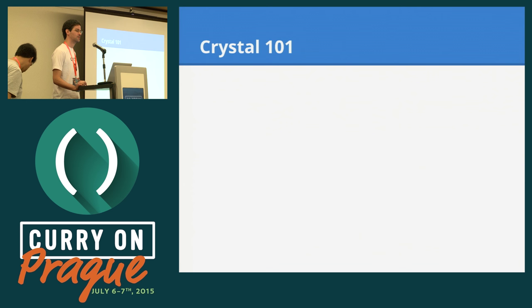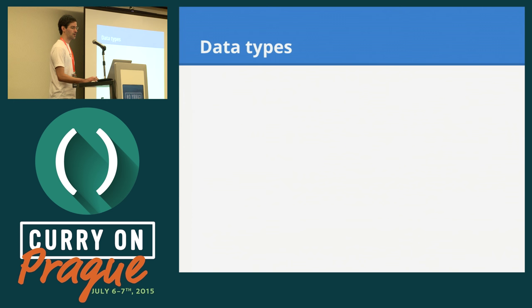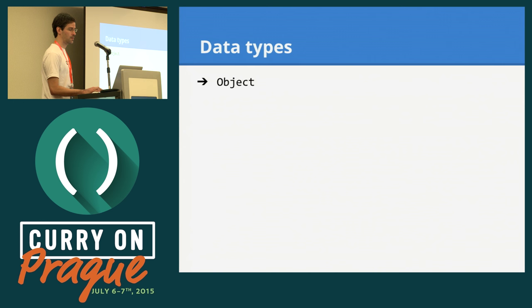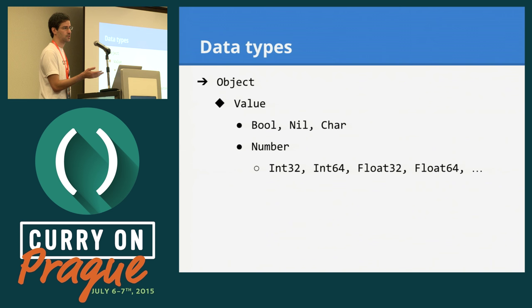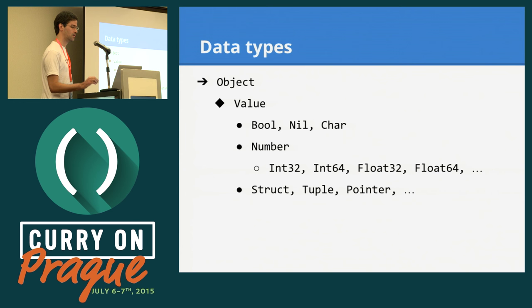Hi everyone, I'm Ari. I'll give you a brief overview of the language. Let's start with data types. Crystal is an object-oriented language, so everything is an object. We have two big categories. First, value types — they are allocated on the stack and are passed by value. These include booleans, characters, and numbers. In32 is just four bytes. We can also define custom user value types using structs, so we can create lightweight wrappers around primitive types and avoid allocating memory in most cases.